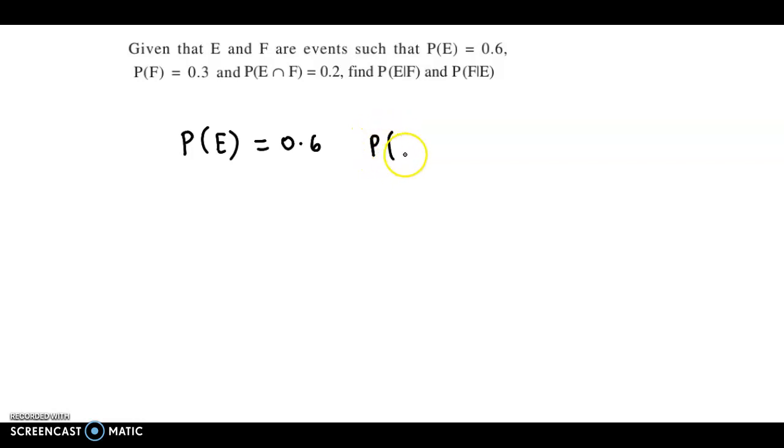event F is 0.3, and probability of E intersection F is 0.2. Find probability of E given F and probability of F given E. We will directly apply the conditional probability formula.